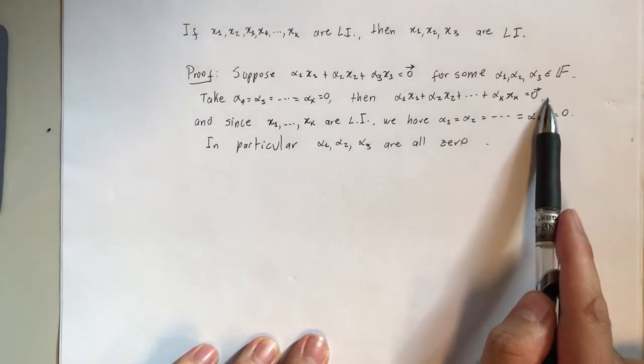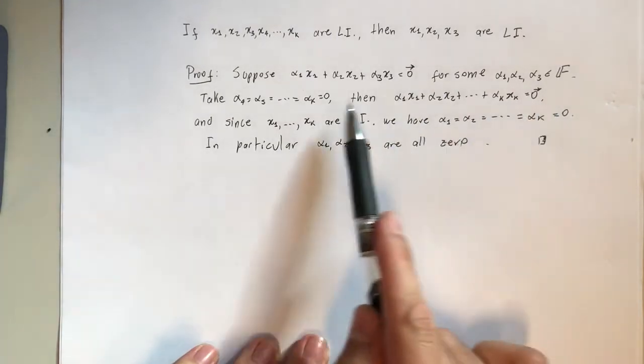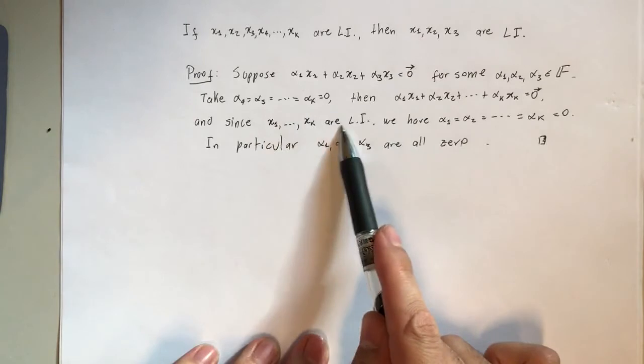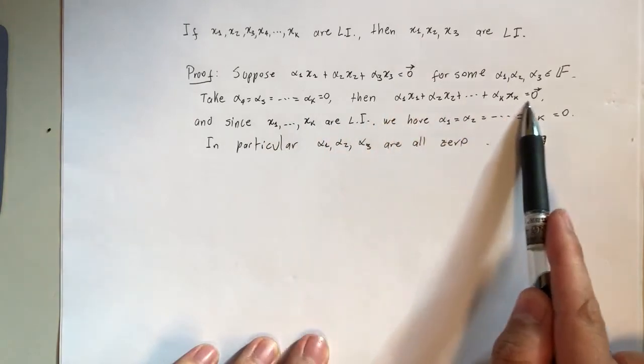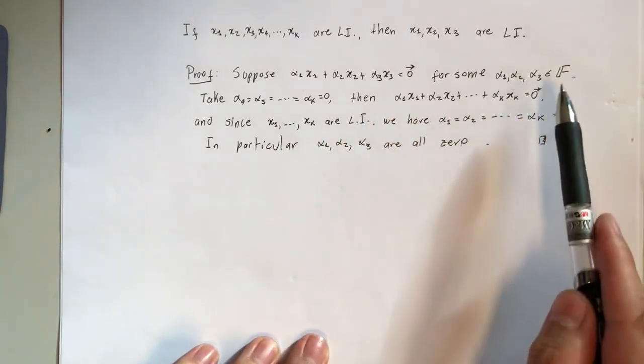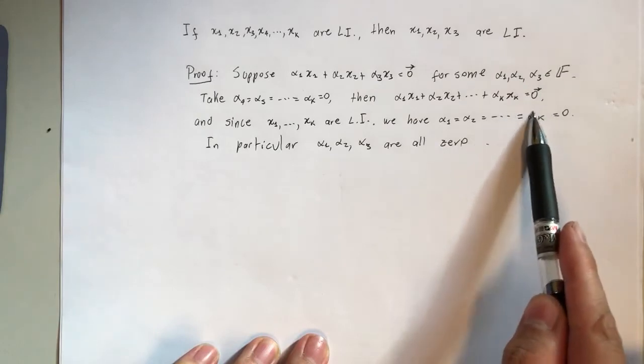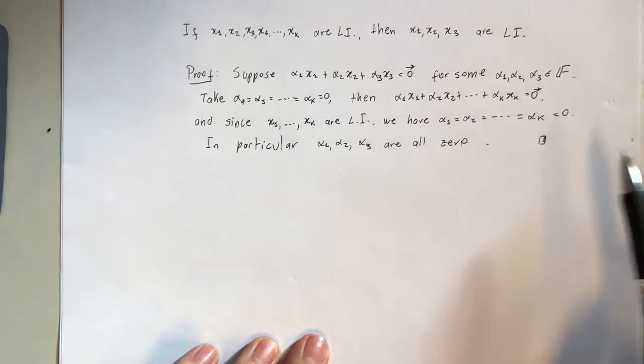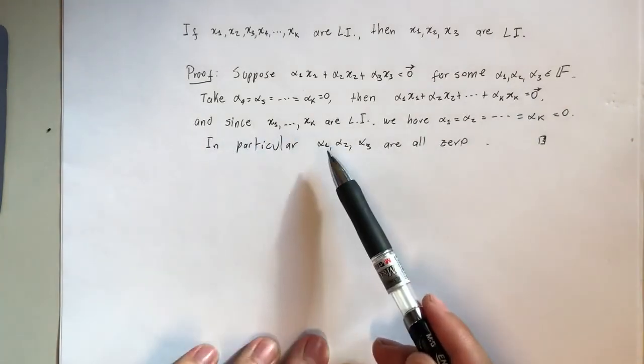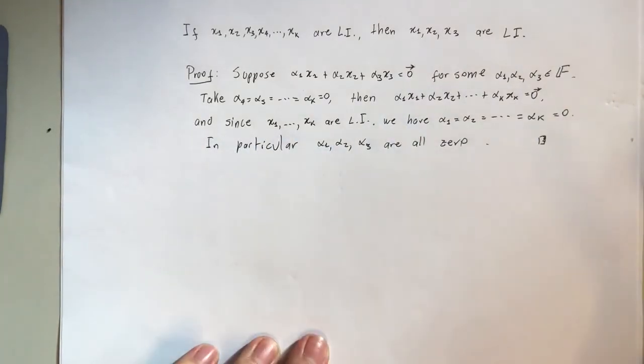But now we know that these k vectors are linearly independent, and this is a linear combination giving the zero vector as the result. Therefore, all these alphas from 1 to k have to be all zero. In particular, α₁, α₂, and α₃ must be zero, and this is what we were trying to prove.